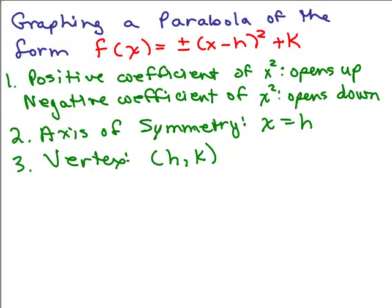So, here's a summarizing of our findings, graphing a parabola of this form, f(x) equals, well, it could be a plus or minus in front of (x minus h) squared plus k. If there's a positive coefficient of x squared, in other words, in front of the parentheses, in this case, is positive, it opens upward. Negative, it opens downward. The axis of symmetry is x equals h. You could get that by just solving, taking the part in the parentheses and making it equal to 0 and solving for x, and the vertex is (h,k).